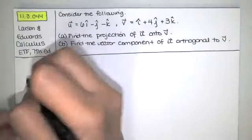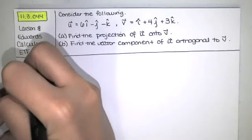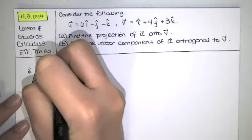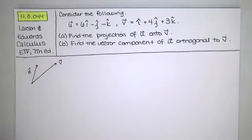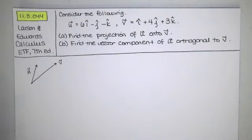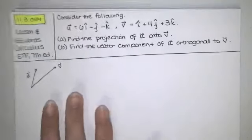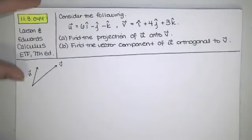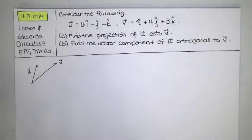Just as a reminder of what these are, let's imagine that this is our vector u and this is the vector v over here. When we're finding the projection of u onto v and the vector component of u orthogonal to v, basically what we're doing is we're splitting the vector u into two pieces.